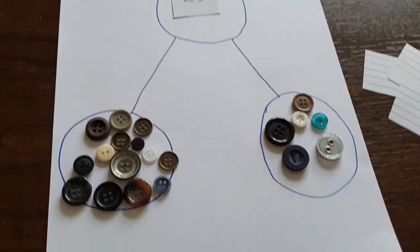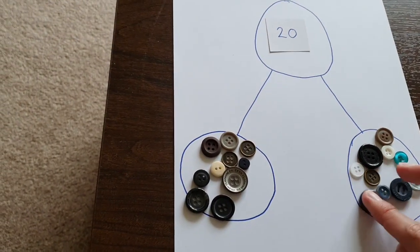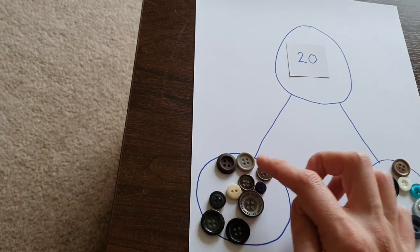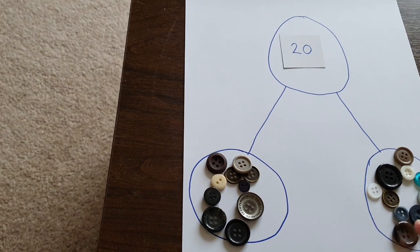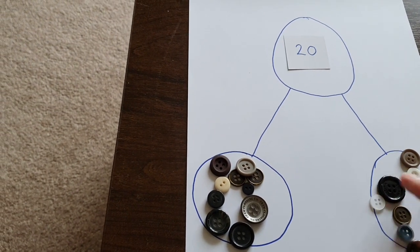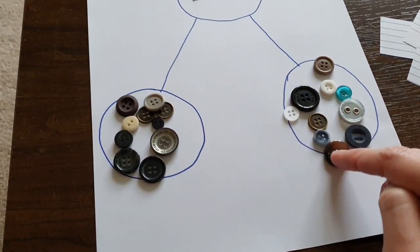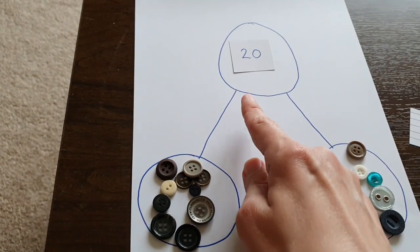Or what you can do is move them again and find out what else. 1, 2, 3, 4, 5, 6, 7, 8, 9, 10 is a part. And 1, 2, 3, 4, 5, 6, 7, 8, 9, 10 is a part. And the whole is 20.